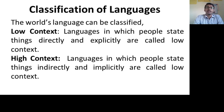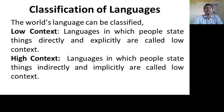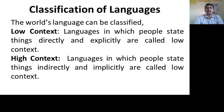In high context language, people state things indirectly and implicitly. In a high context language, people are not able to express directly — they cannot be understood directly. They express their opinions indirectly and implicitly. Indirectly and implicitly are the main keywords for high context language. This is regarding the classification of languages.